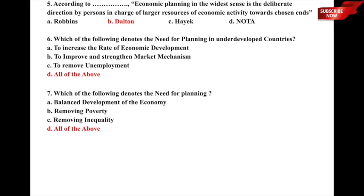In questions 6 and 7, we have seen six important needs for planning in underdeveloped countries: to increase the rate of economic development, to improve and strengthen the market mechanism, to remove unemployment, to remove poverty, to remove inequality, and for balanced development of the economy.